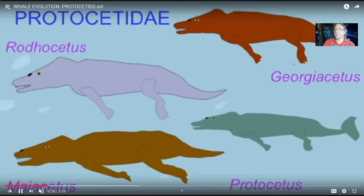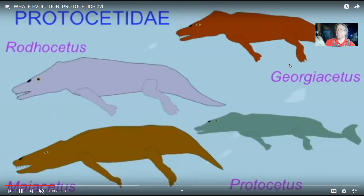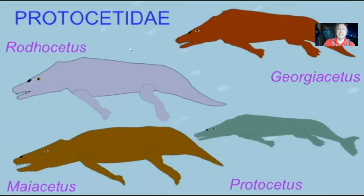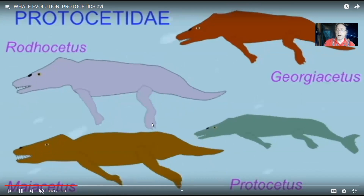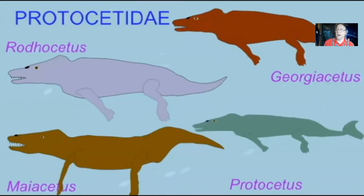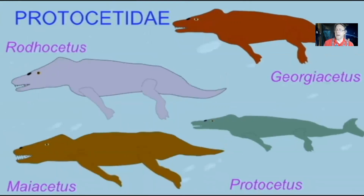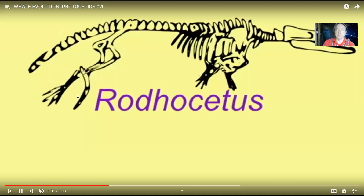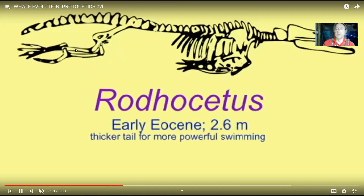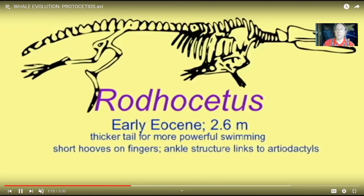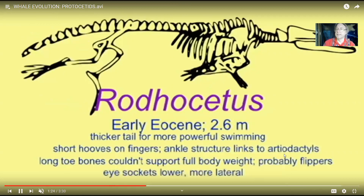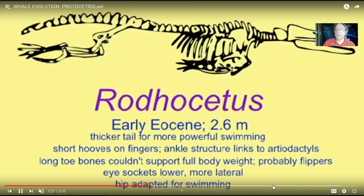Georgiacetus is named for the country of Georgia in Central Asia, as opposed to the state in North America. Myocetus is another — some of these are on display in the Smithsonian in Washington DC, hanging from the ceiling. While they still had four legs, Rhodocetus had a hind limb that formed a flipper. The bones were long and delicate and would not have been adapted to supporting the weight of this large animal on land, but rather would have been a flipper for propelling the animal in the water. The tail was becoming modified for powerful swimming, but these were still animals with four legs linked to the artiodactyl descendants of the condylarths.